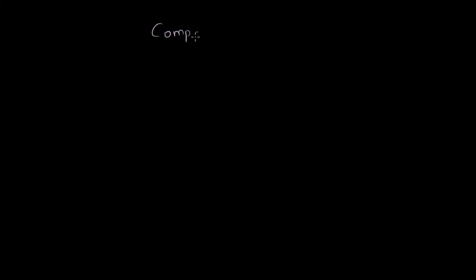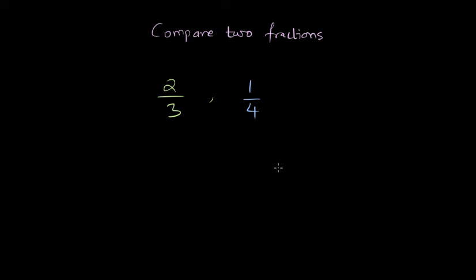Let us see how we can compare two fractions using cross multiplication. In this method, we multiply the numerator of one fraction by the denominator of the other fraction. For example, given two fractions 2/3 and 1/4, we need to tell which fraction is greater. We take the numerator of one fraction with the denominator of the other and multiply, then do the same for the other pair.